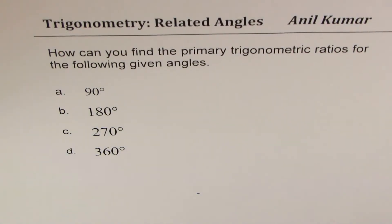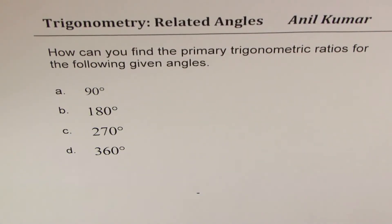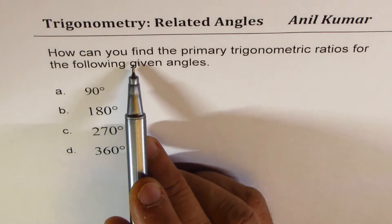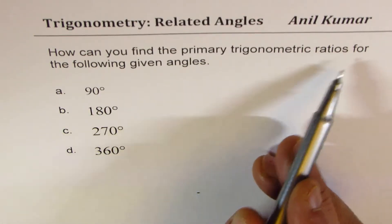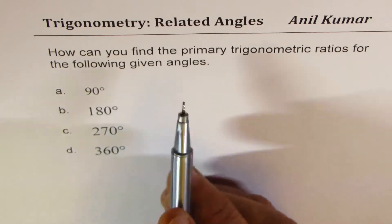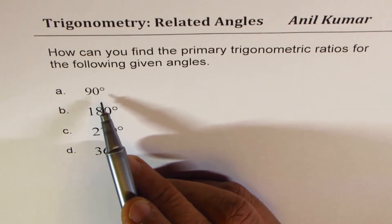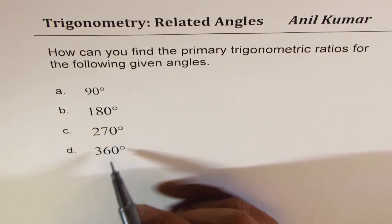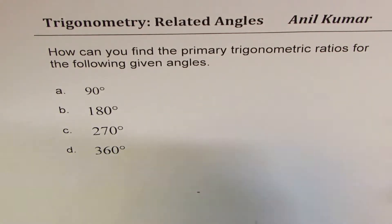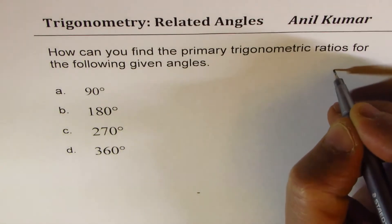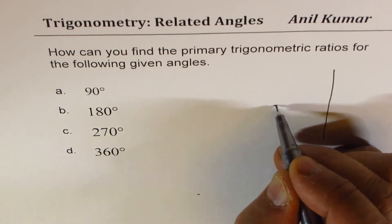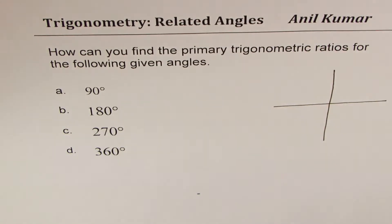I'm Anil Kumar and in this video we will learn how to find primary trigonometric ratios for given angles. The question is: how can you find primary trigonometric ratios for the following given angles — 90 degrees, 180 degrees, 270 degrees, and 360 degrees? I'll draw the Cartesian plane here and then take up different points.